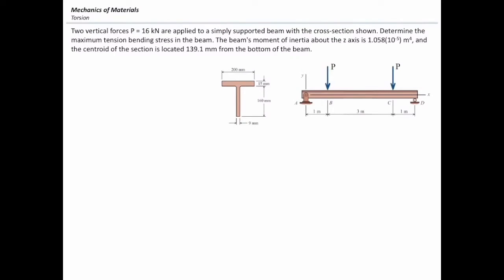In this problem, there are two vertical forces, each of which has 16 kN in magnitude, and they are applied on a simply supported beam which has a T-shaped cross-section. The problem asks what is the maximum tension bending stress in the beam.